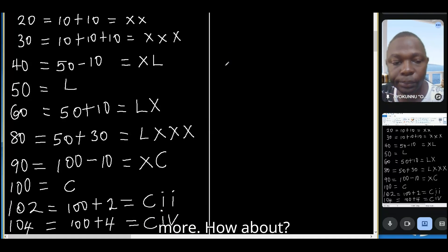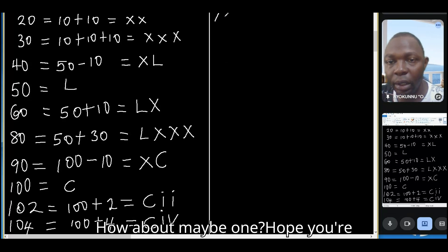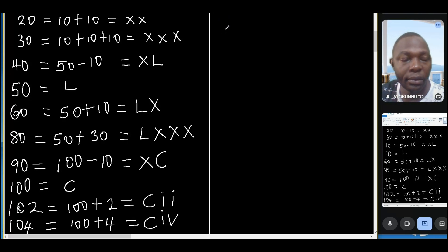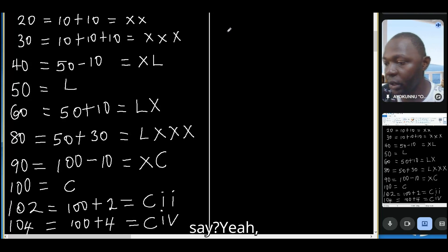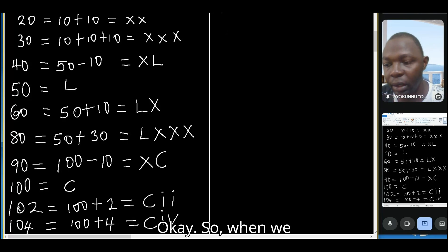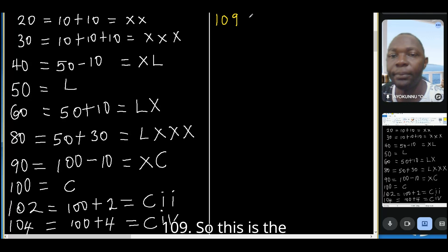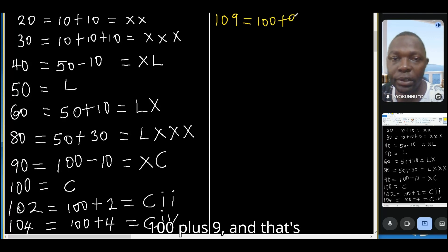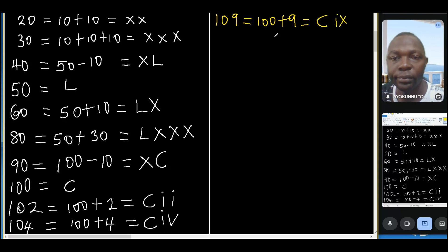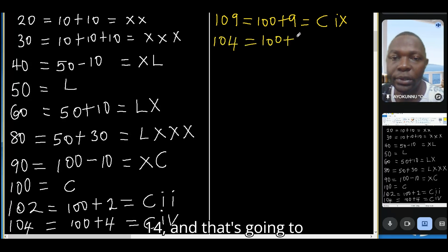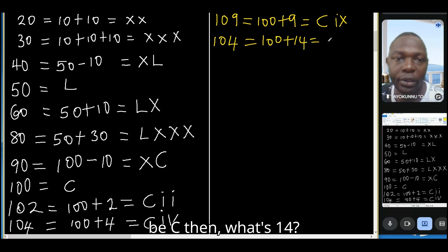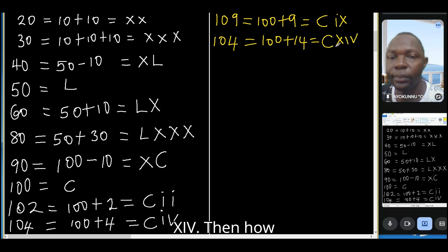One hundred and four is 100 plus 4, and since 4 is IV, that gives CIV. Let's do a few more. One hundred and nine is 100 plus 9, which is C then IX.